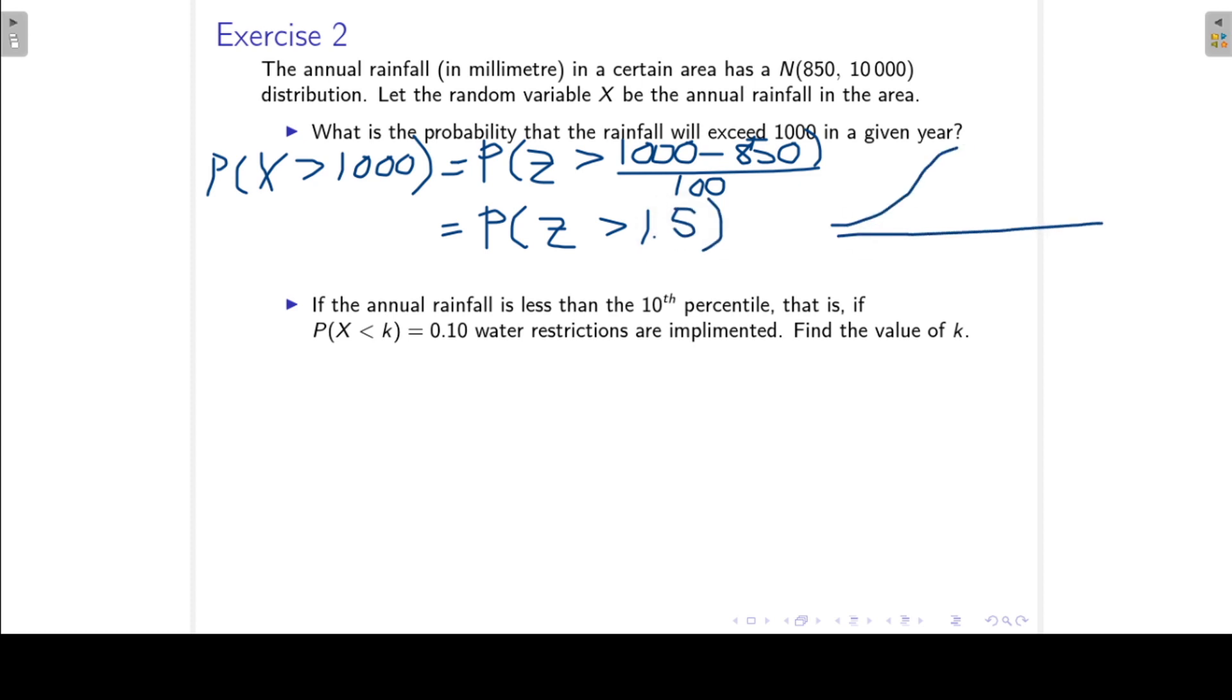Okay, if we make the little drawing for our normal distribution, we want to find the area to the right of 1.5. And that is the same as 1 minus the area to the left of 1.5.